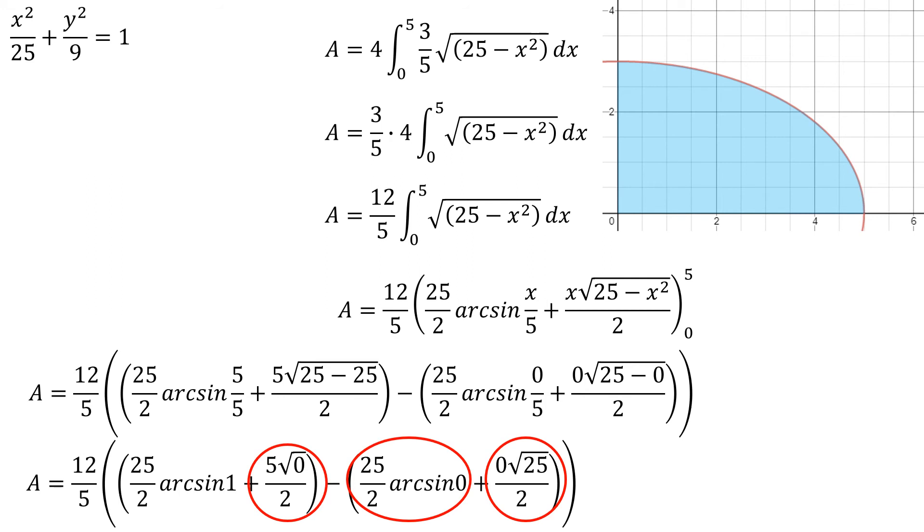So all I really have to play with is that 25 over 2 times the arc sine of 1. Well, where are we on the unit circle when sine has a value of 1? We're at pi over 2. So all we have for that area is 12 over 5 times 25 over 2 times pi over 2.